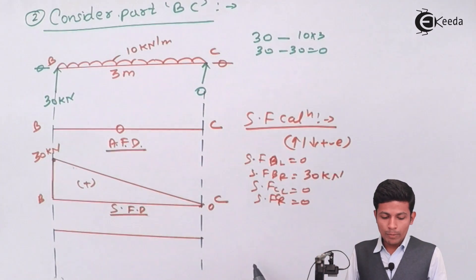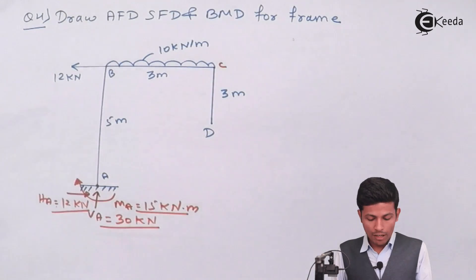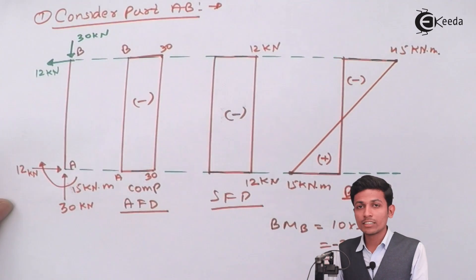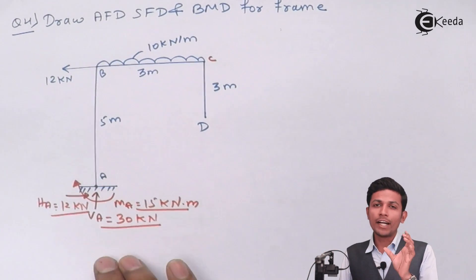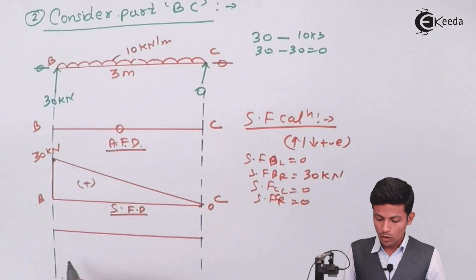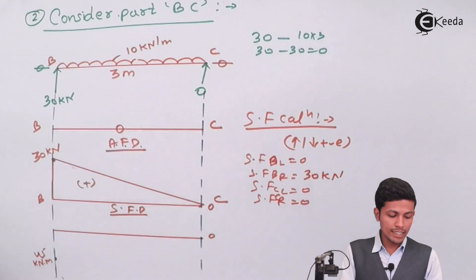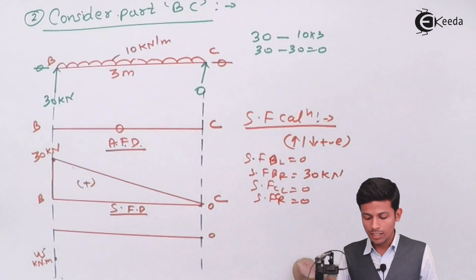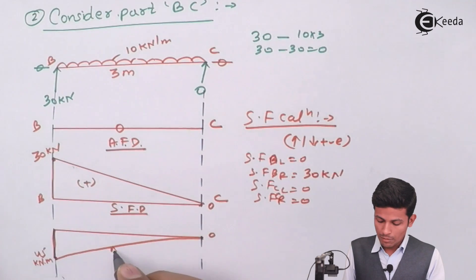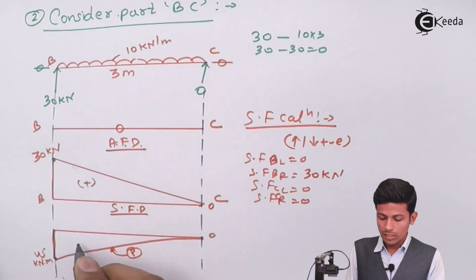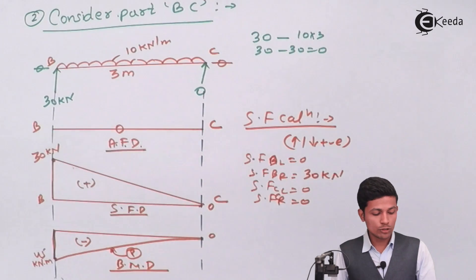For the BMD of member BC: bending moment at C = 0 (free end). Bending moment at B = −45 kN·m (already calculated for member AB, same value applies here). The curve between B and C is parabolic due to the UDL, going from −45 kN·m at B to 0 at C. Negative means inside the frame.